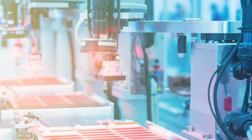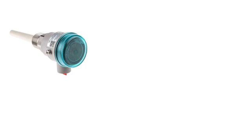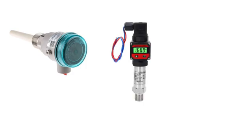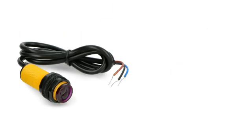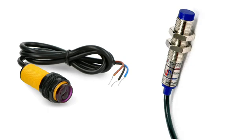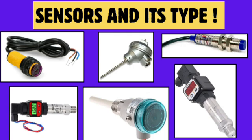There are different kinds of sensors available in the market, but the most common types used in industries are five: level sensors, pressure sensors, temperature sensors, infrared sensors, and proximity sensors. Proximity sensors are especially important because they are used most frequently in industries. These are the five common types of sensors which are very frequently used in industries.